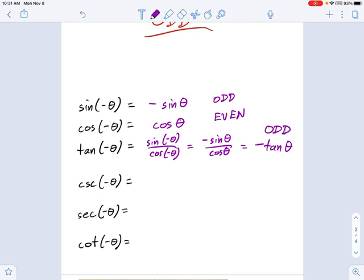And if we go into cosecant, let's take a look at what cosecant is. Cosecant is 1 over sine. That's my reciprocal identity right there. And sine of negative theta is going to be negative sine of theta. And what I just wrote there is negative cosecant. So I can see that cosecant is also odd.